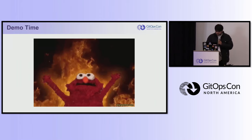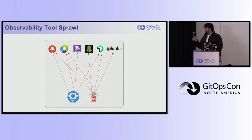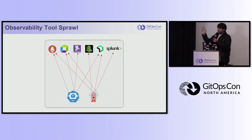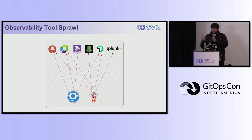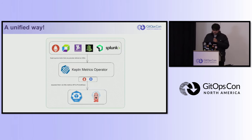Now coming to the next part — I call it 'Observatory tools for all.' You might use Argo Rollouts, HPA, or KEDA, making decisions based on tools like Splunk, New Relic, or Prometheus. Certain metrics are available in Prometheus but not in Splunk, so you might be using different observability providers. Maintaining integrations between all these tools is very difficult. This is where the Keptn Metrics Operator comes into play.